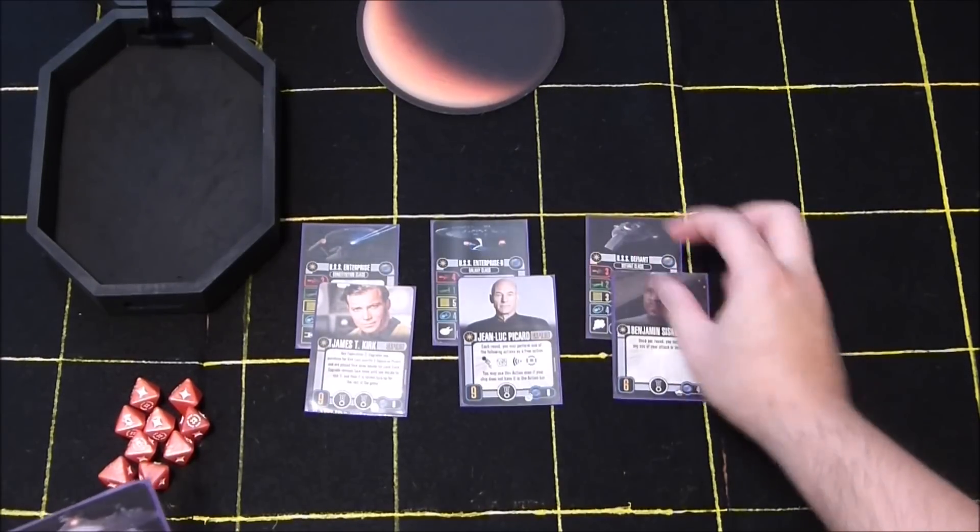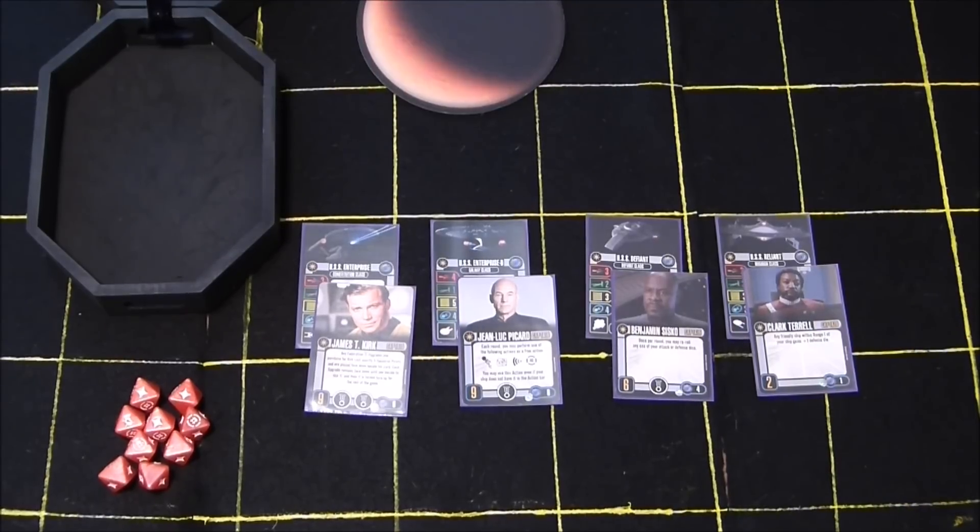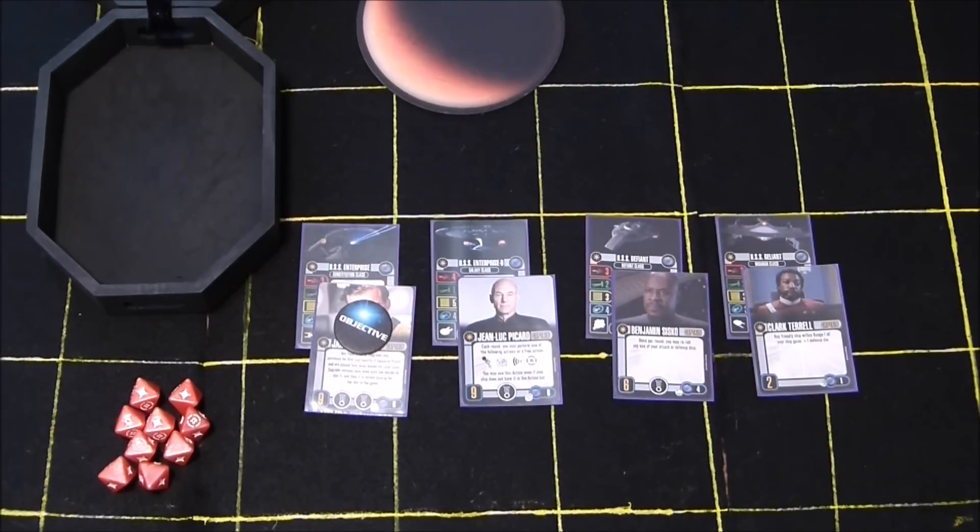At the end of round one of play, during the end phase, each player's highest skilled captain, and you can choose if there is more than one, will be sent down to the planet and receive an Away Team marker. Any captain with an Away Team marker is unaffected by anything that affects the ship he was previously on, and the captain's abilities no longer affect that ship since he is no longer on it.